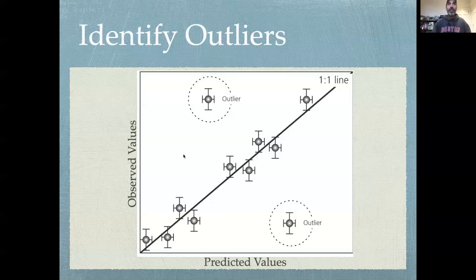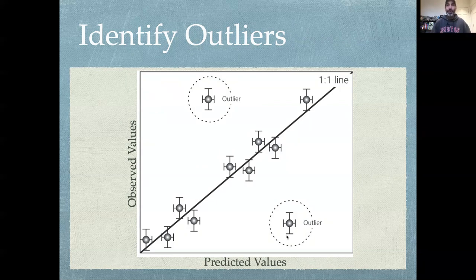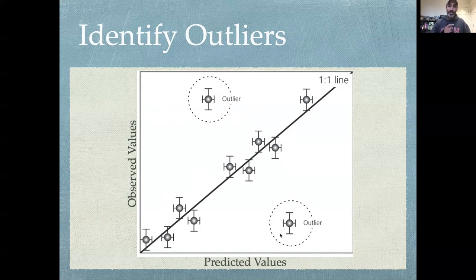So sometimes what you'll see when you make this predicted-observed plot is that most of the data is actually well calibrated but then sometimes you see outliers. A couple key things about outliers. The first thing is you'll sometimes encounter automated algorithms for removing outliers. Don't trust that.